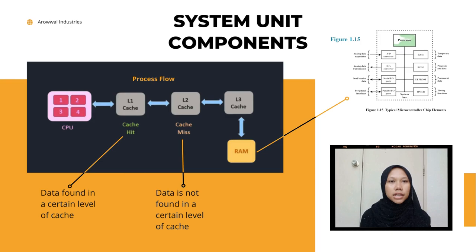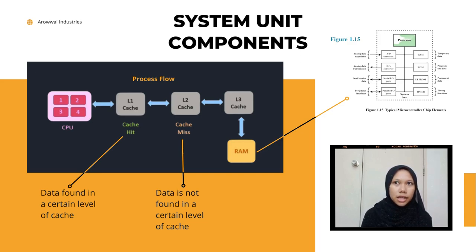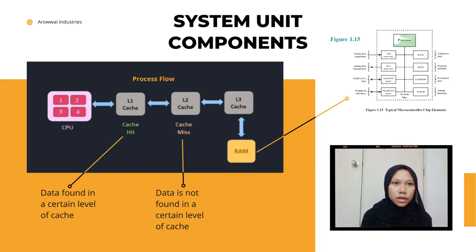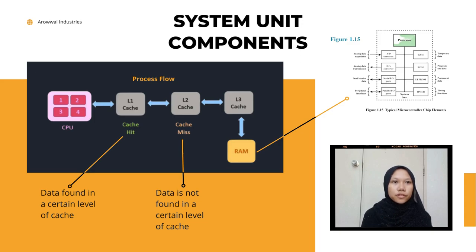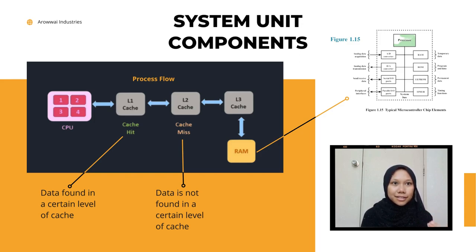The CPU works by searching for data in the cache and in DRAM. First, the CPU will look for data in the Level 1 (L1) cache. If the data is not available in L1 cache, it will look into L2. If the data is also not available in L2, then the CPU will look into L3. When the CPU finds the data in the Level 1 cache, it is known as a cache hit.